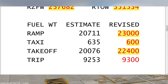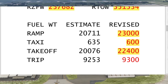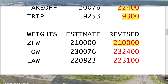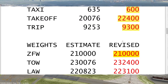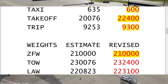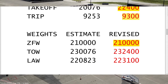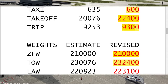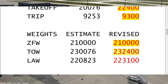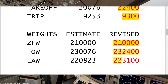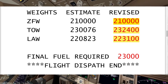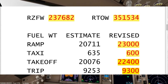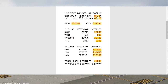The taxi fuel I use from the flight plan: I'm expecting to burn 600 kg — not as precise as the 635 in the flight plan, but rounding down. So 23 tons minus 600 kg gives a takeoff fuel of 22,400 kg. The trip fuel, instead of 9,253 kg, I rounded up to 9,300 kg. Then the revised zero fuel weight of 210 tons plus the revised takeoff fuel of 22,400 gives a revised takeoff weight of 232,400 kg. Minus the 9,300 kg trip fuel, we have a revised estimated landing weight of 223,100 kg. We require 23 tons of fuel to be loaded today.